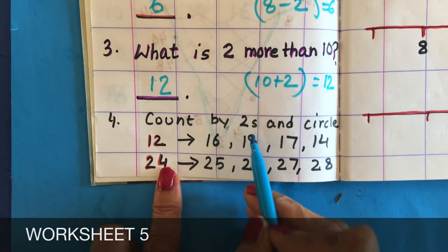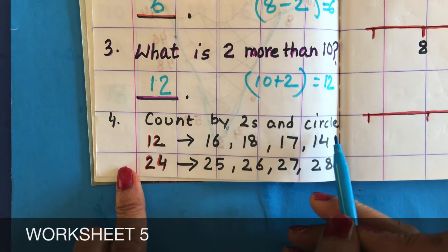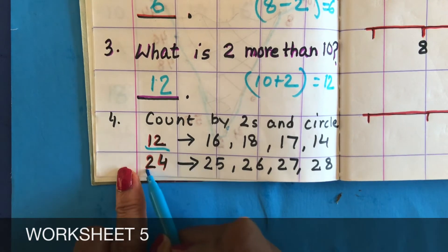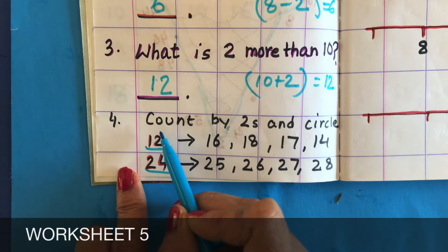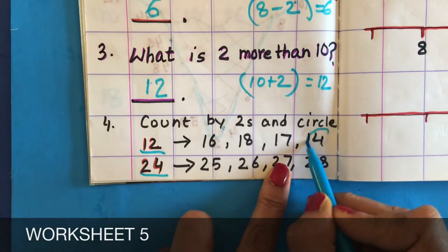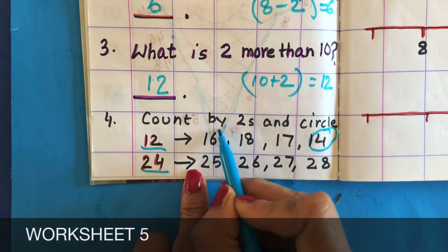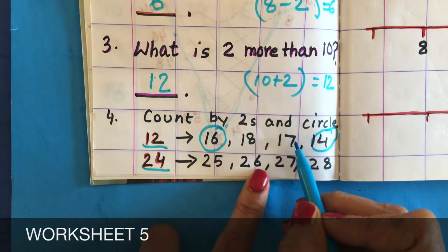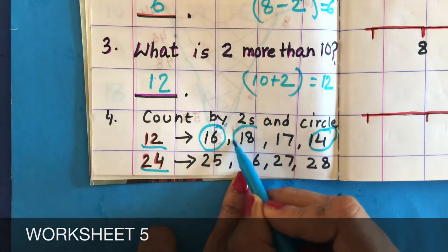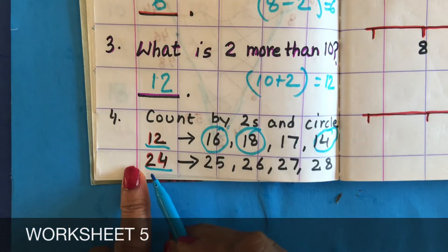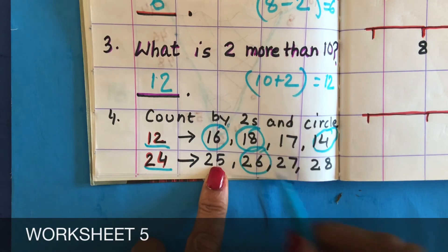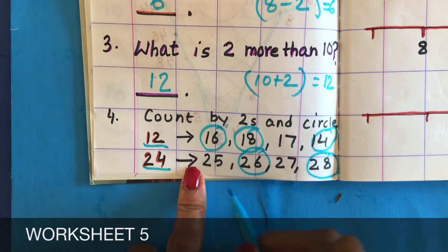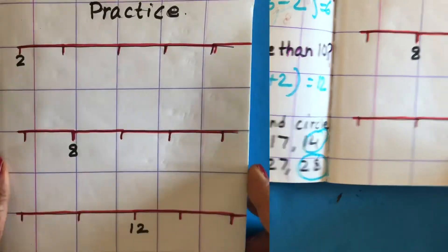Count by twos and circle: the given number is 12, so they count by twos — after 12 comes 14, then 16, then 18 (not 17). Here again the same thing: it's 24, what comes next? 26, then 28 — not 25 or 27.